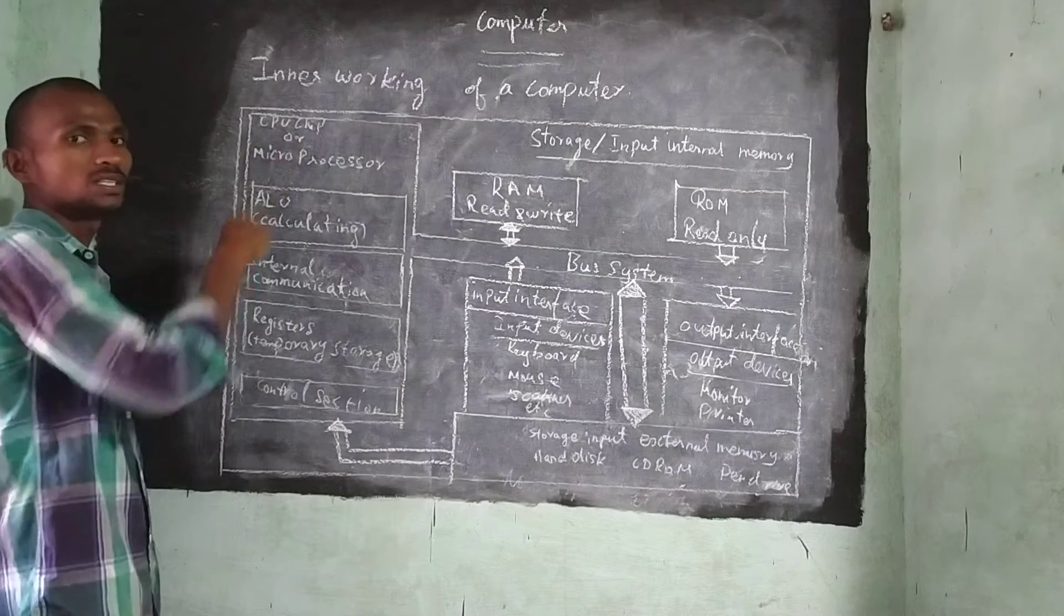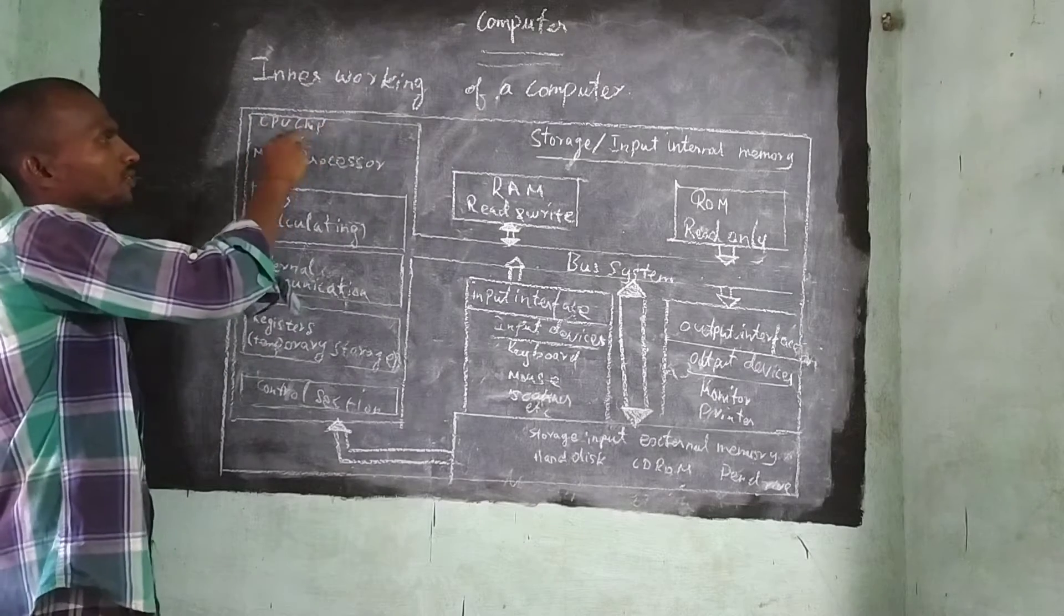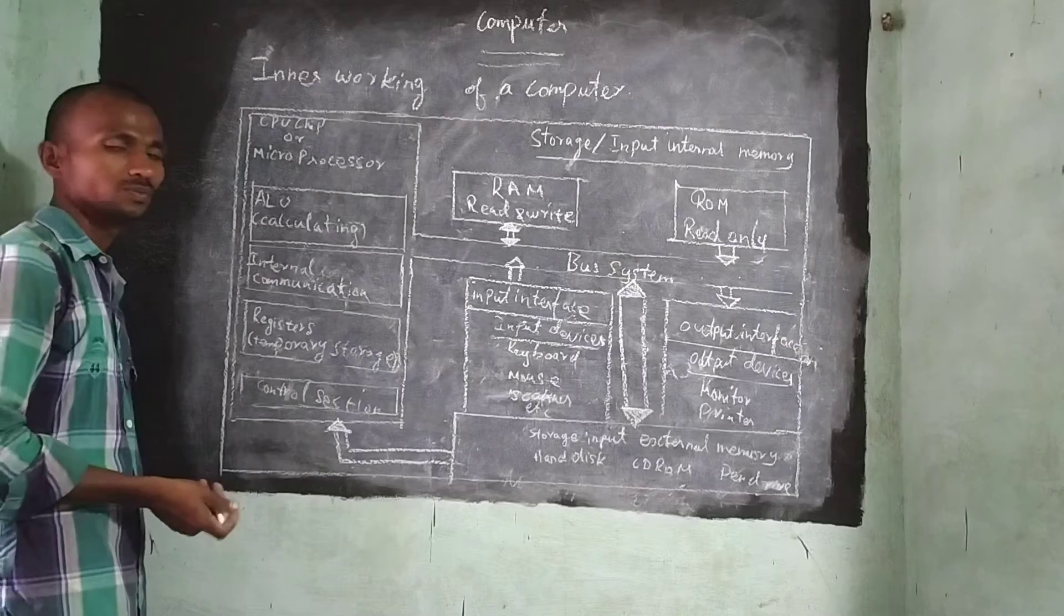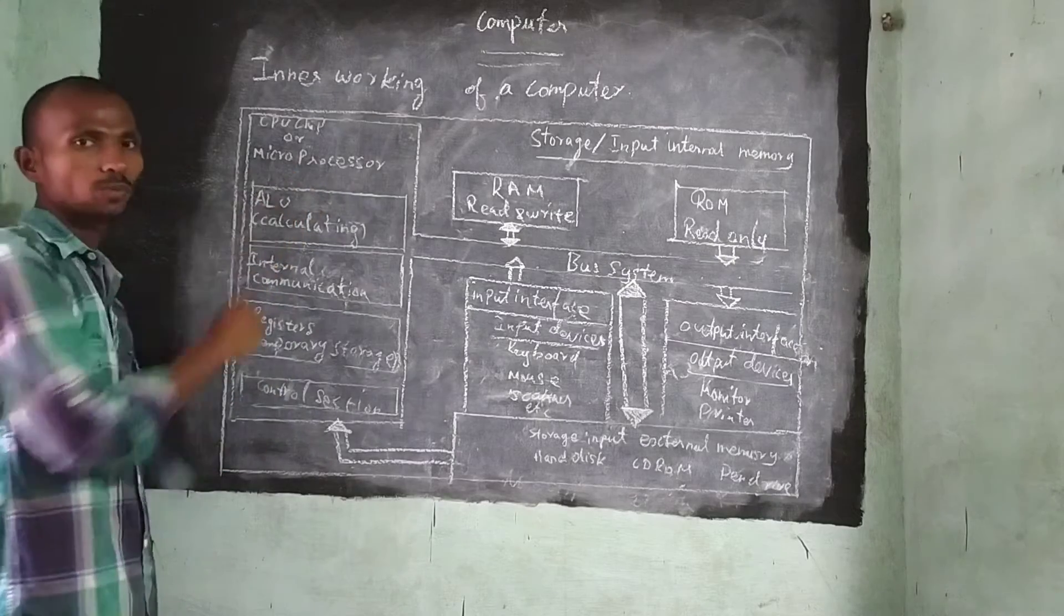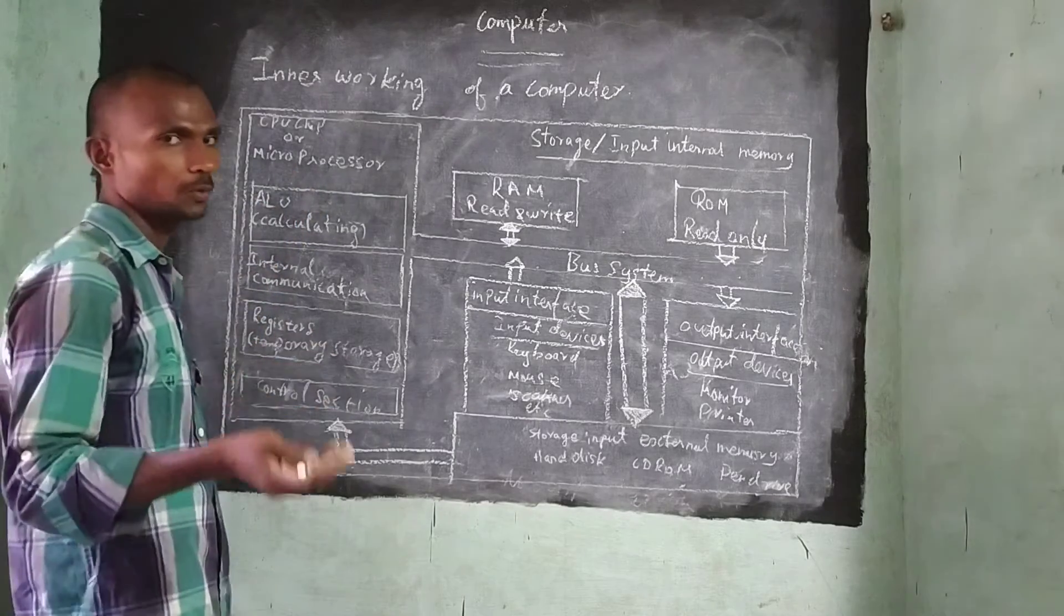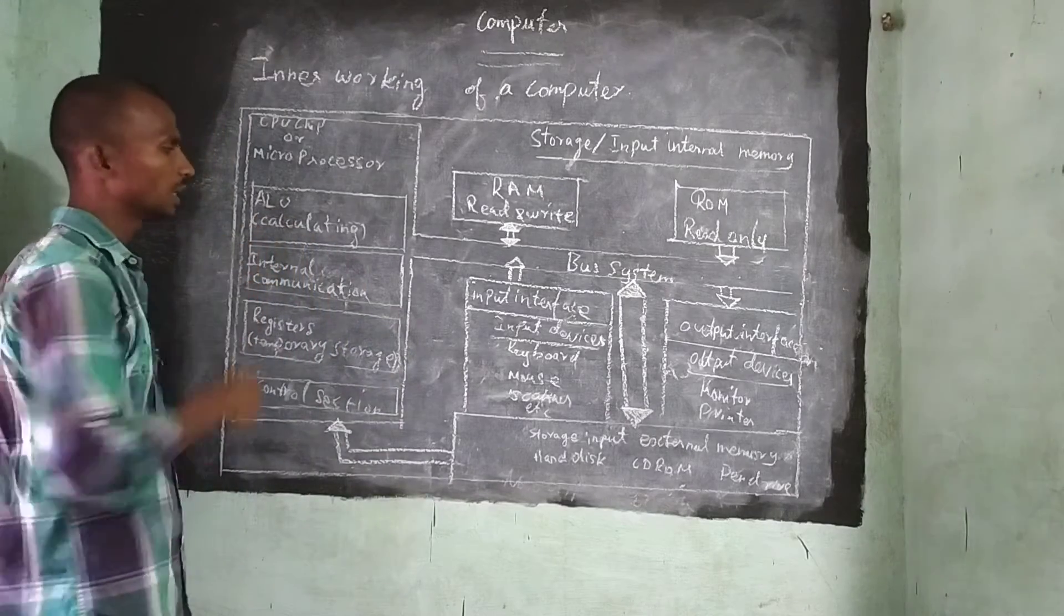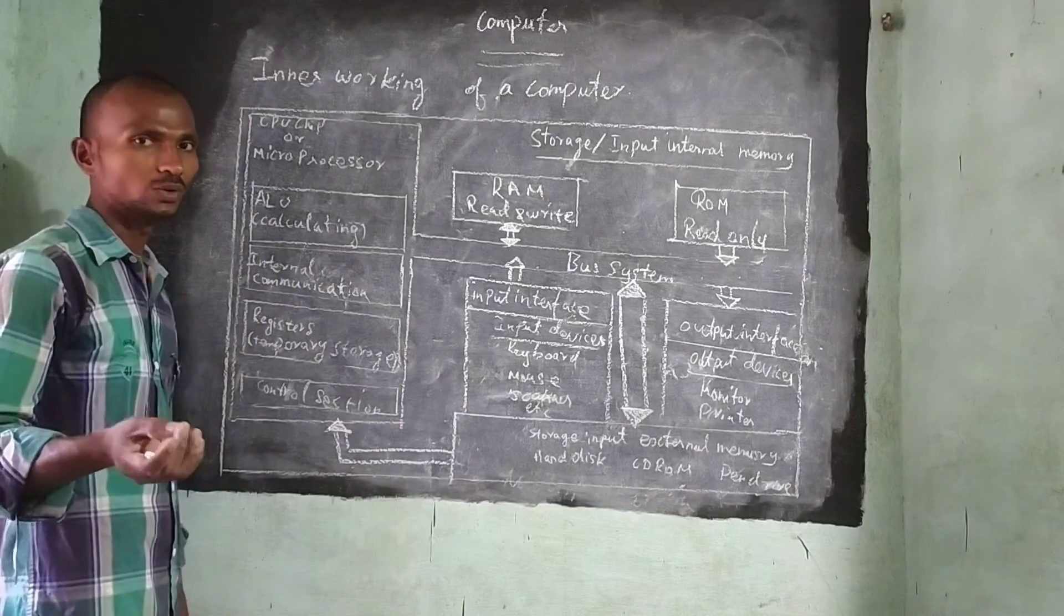This is the CPU chips. What is it? CPU chips. First, CPU chips means the microprocessor. We can say as a microprocessor. Next, ALU. ALU means Arithmetic Logic and Unit.